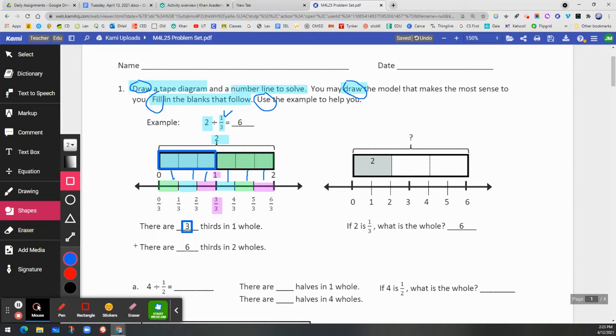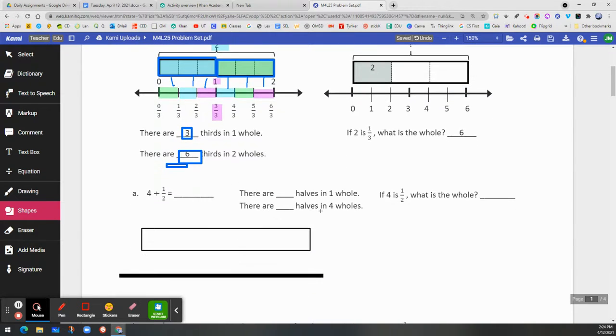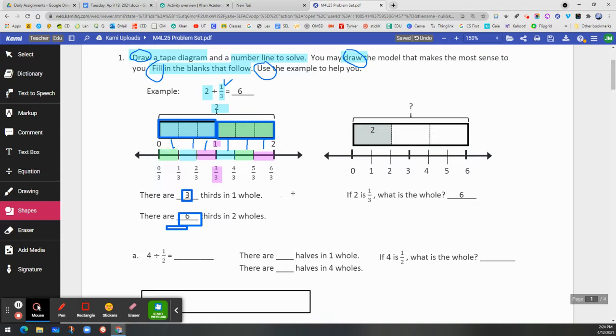Now the next question says, there are how many thirds in two wholes? Well, when that happens, you look at the whole thing. You look at the other whole. So that's going to be three-thirds. Three-thirds plus three-thirds equals six-thirds. And that's where we get that answer there. So there are six-thirds in two wholes. That is the explanation of the example. Look at the example to assist you to do the other two problems. Let's look at the other one.